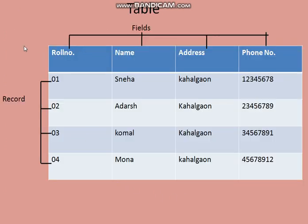A table stores information under records and fields. A database is made up of a basic unit called tables.